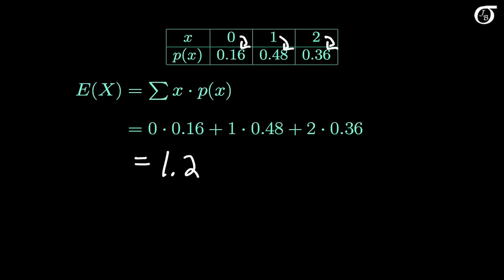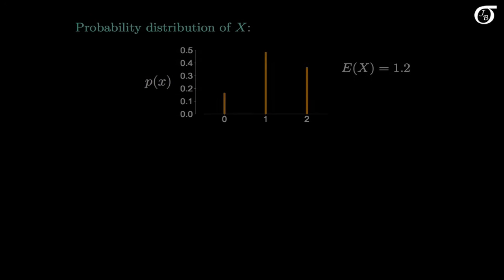On average, X will equal 1.2. Let's see where that expected value falls on the plot of the distribution. The expected value of 1.2 falls right here on this distribution. If 0, 1, and 2 were all equally likely, then the expected value would be 1. But here, 2 is a little more likely than 0, which moves the expectation a little bit higher.